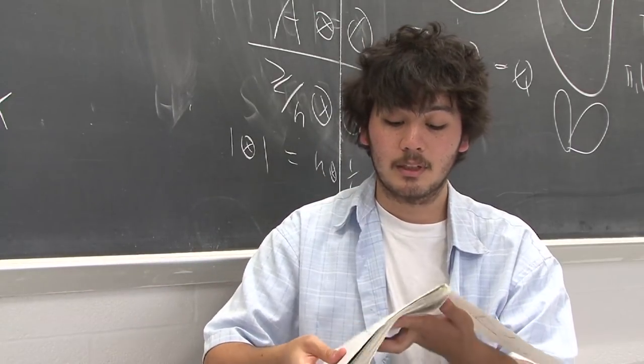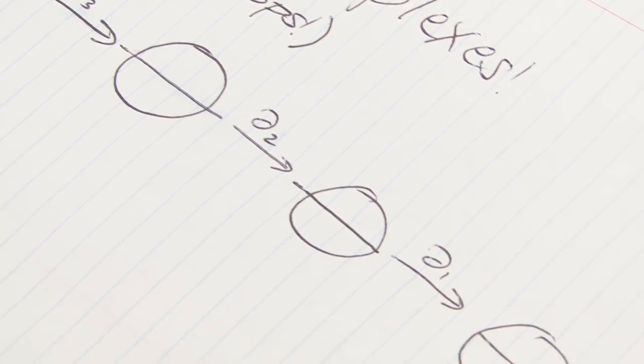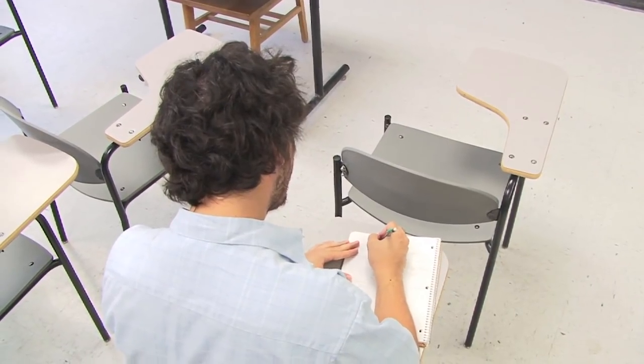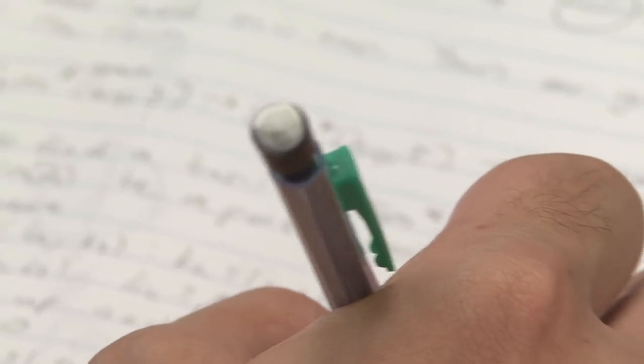Specifically, I'm studying graph complexes of two loops. These are a bit difficult to compute, so I'm studying actually a representative algebra of these graph complexes, namely symmetric and anti-symmetric algebras, or symmetric and anti-symmetric polynomials.